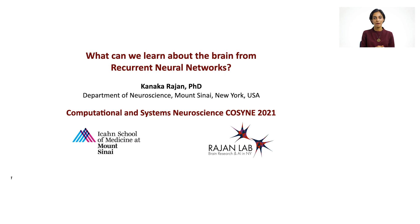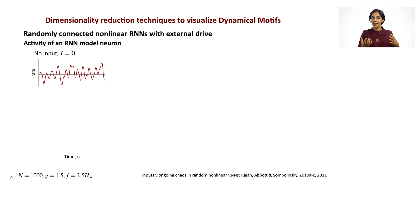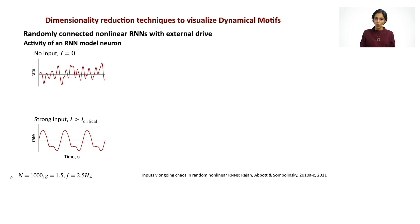Hi, welcome back. This is part two of the cosine tutorial on what can we learn about the brain from recurrent neural networks. In the first lecture, we saw how randomly connected nonlinear RNNs can produce spontaneous activity that is rich and ongoing. When inputs go into these networks above a certain critical input amplitude, we saw how networks like this can quench their intrinsic variability and become entrained to the frequency of the drive. We saw this phase transition and explored its various properties in the randomly connected regime.